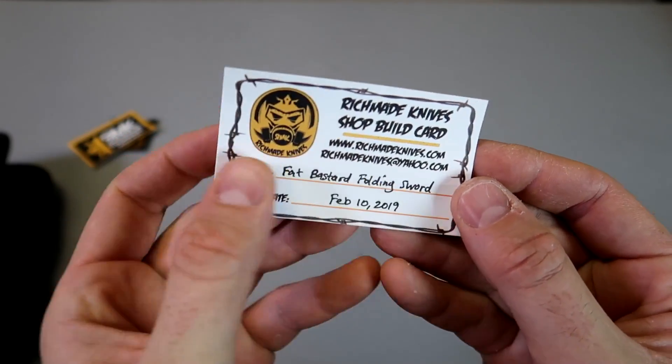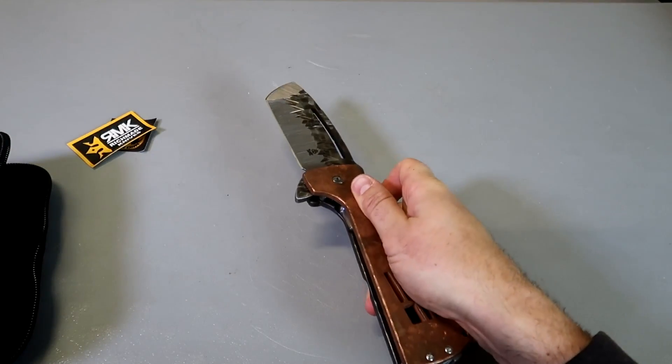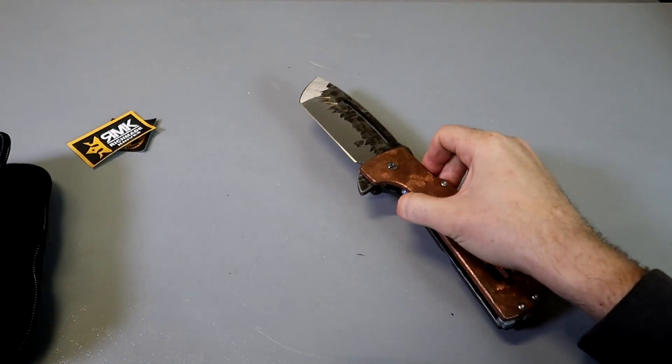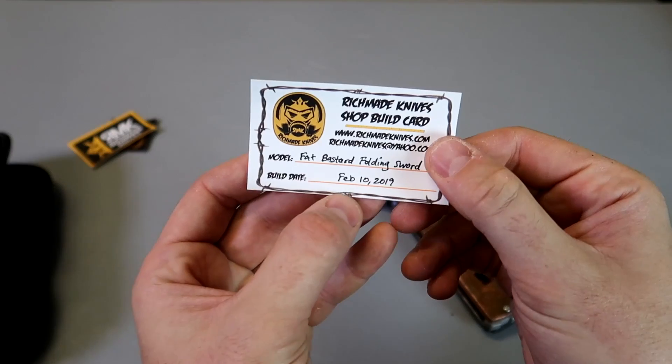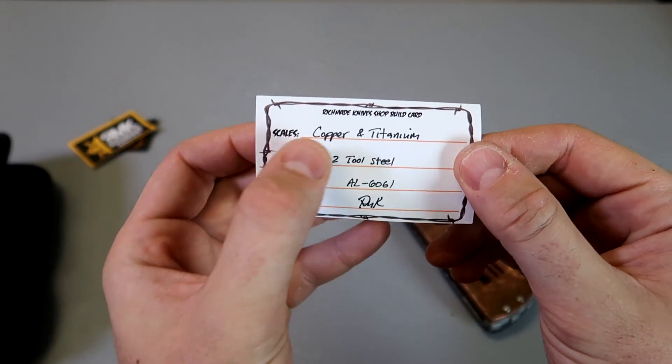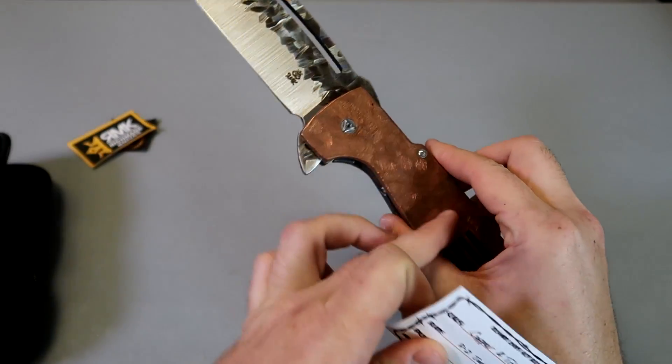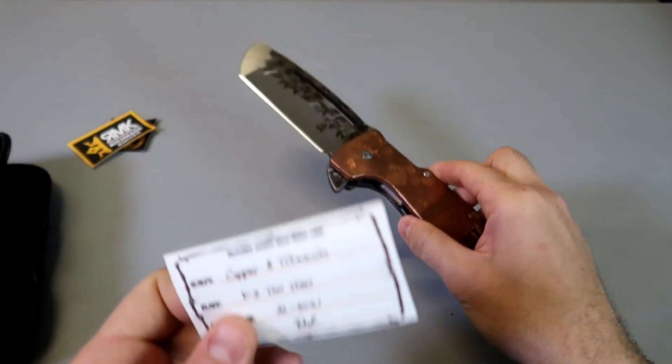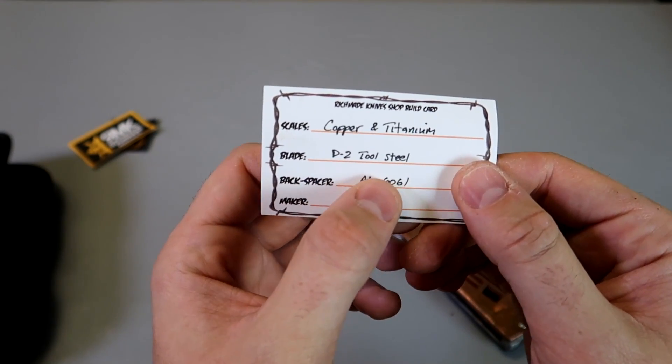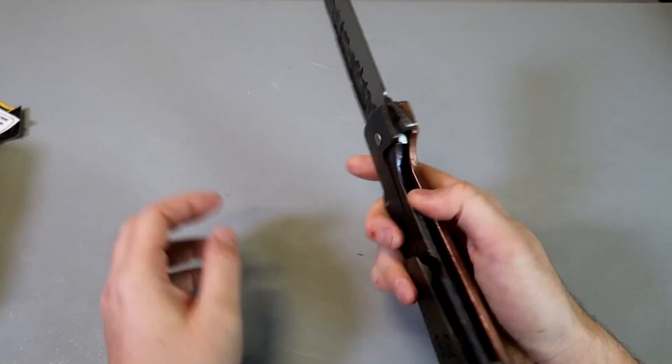Fat buster folding sword, I want to call it almost like a machete. Let's do a little folding action. Do you see how easy it is? Let's use logo as well. Okay February 10, 2019 this one was made. Copper and titanium and blade. So this is copper, this is titanium, and blade is D2 tool steel. So very expensive high end steel. So let's look at it close up.